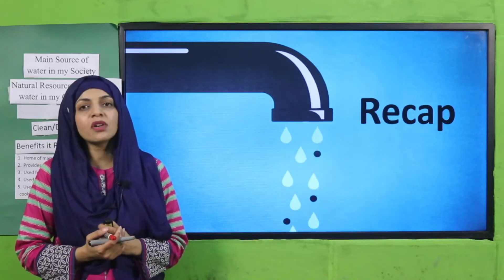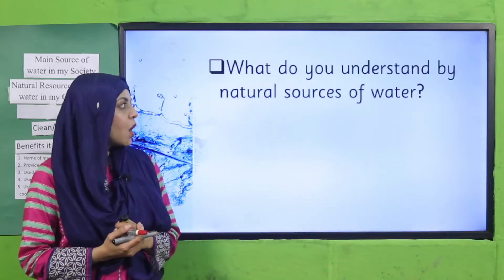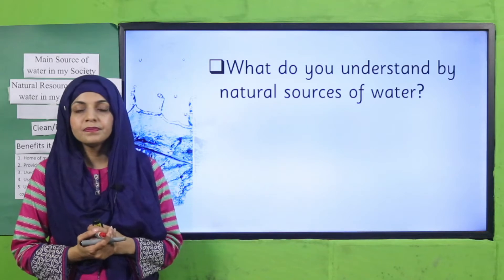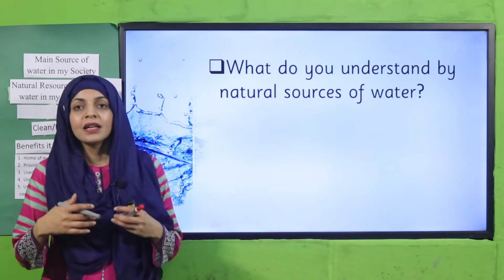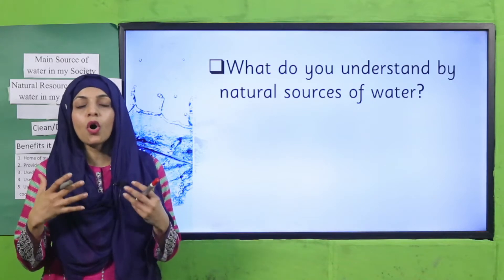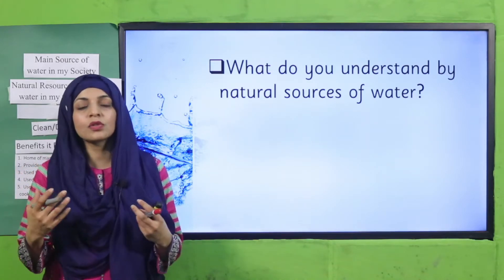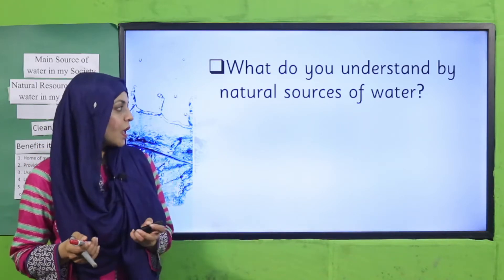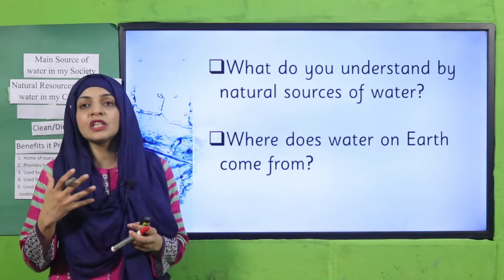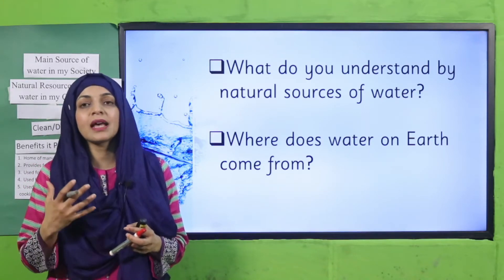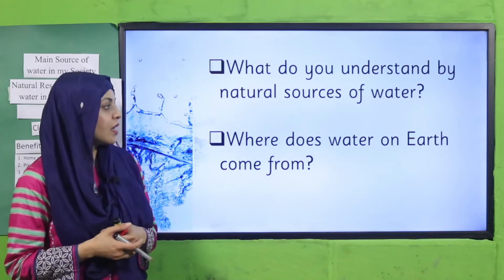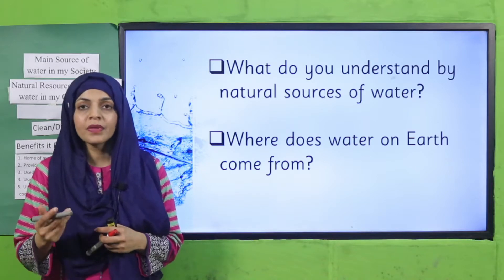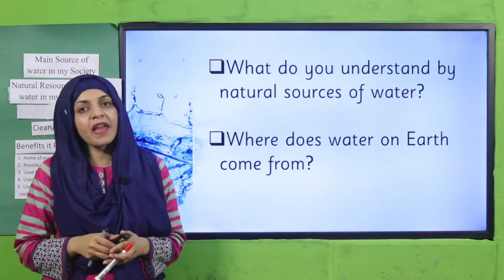For that, you have to answer a few questions. So quickly tell me, what do you understand by natural source of water? It provides water to all the living things on earth — that's what we understand by the word source — it fulfills the needs of all living things. So where does water on earth come from? It comes from rain and snow. Very nice.